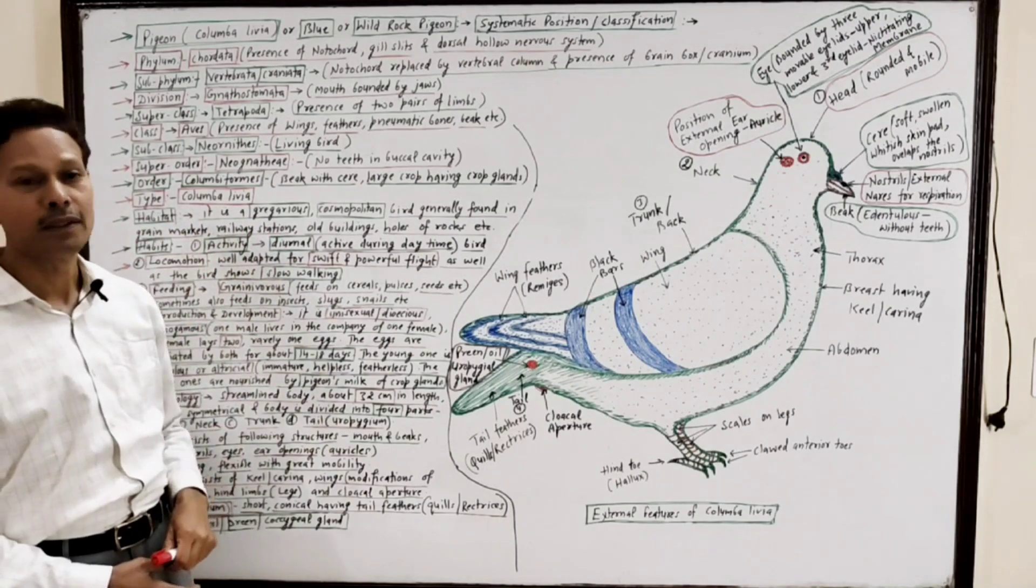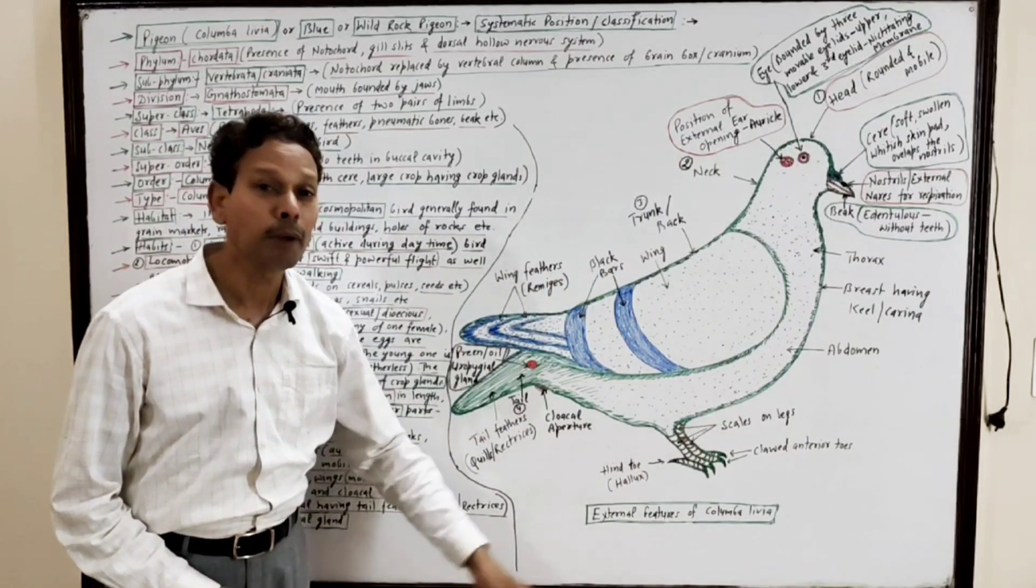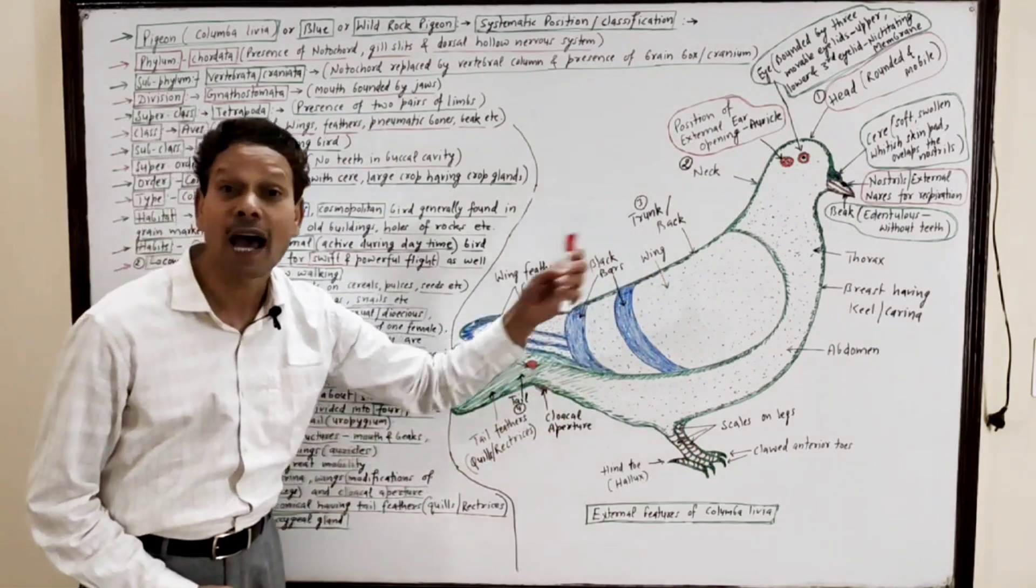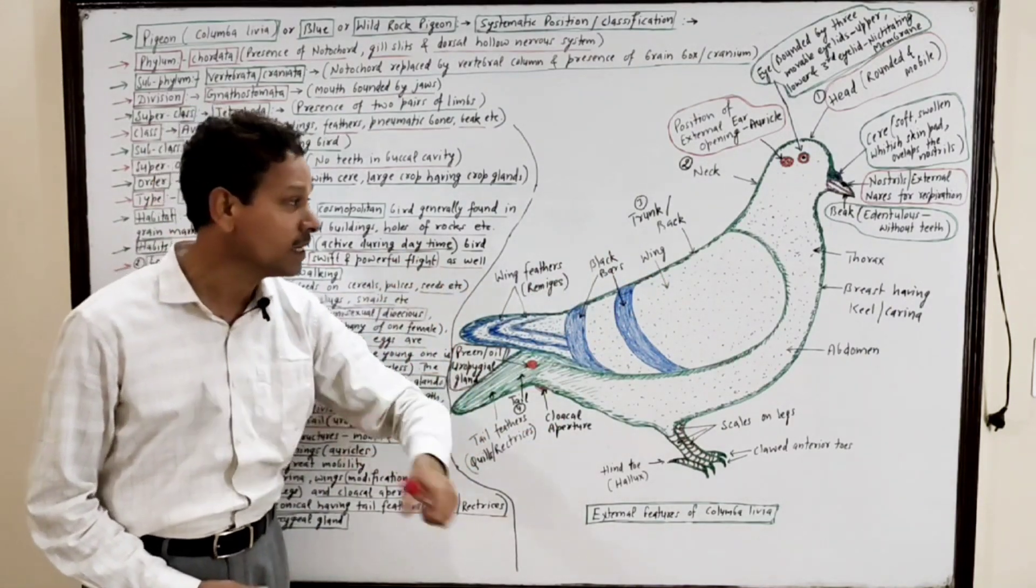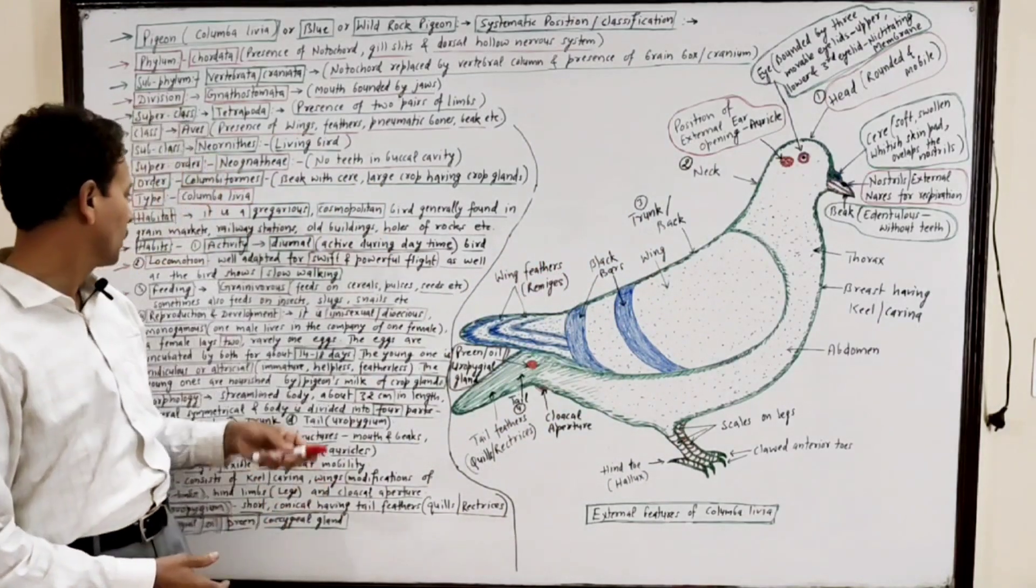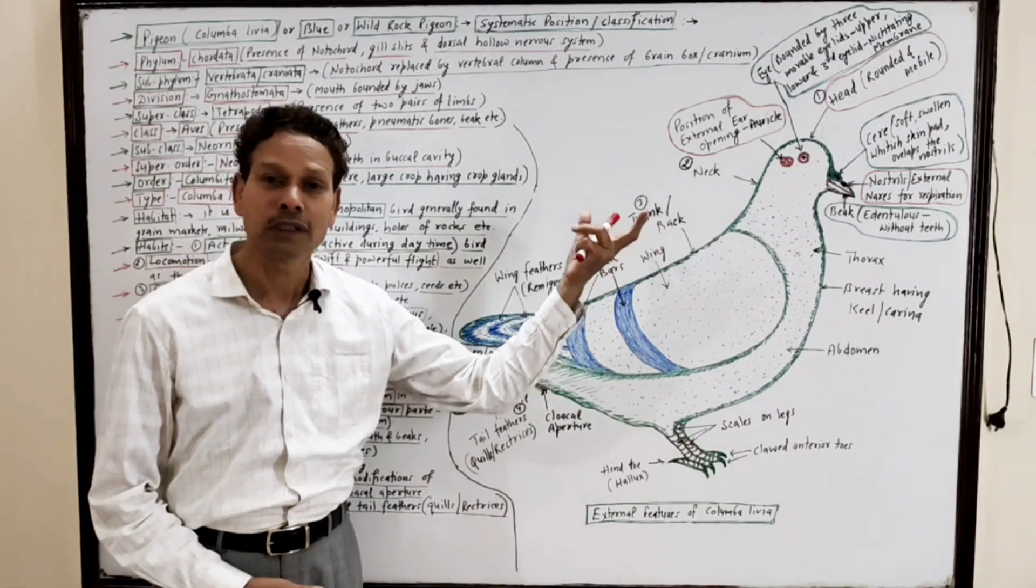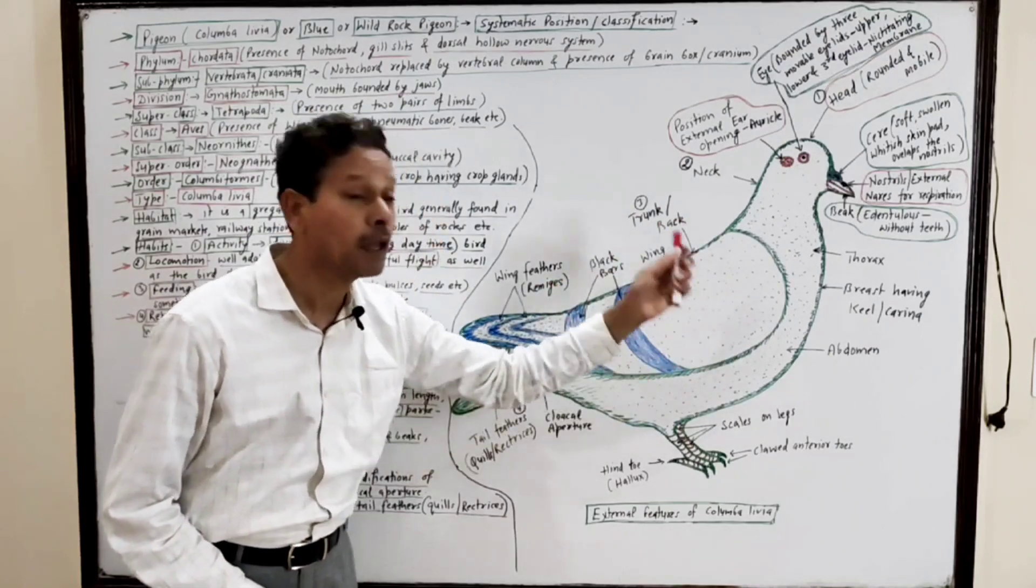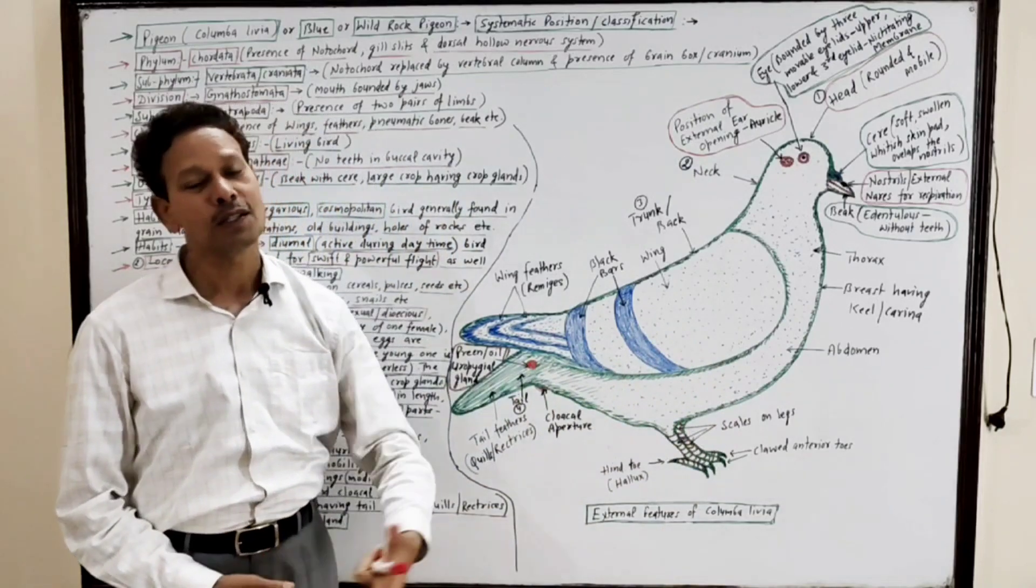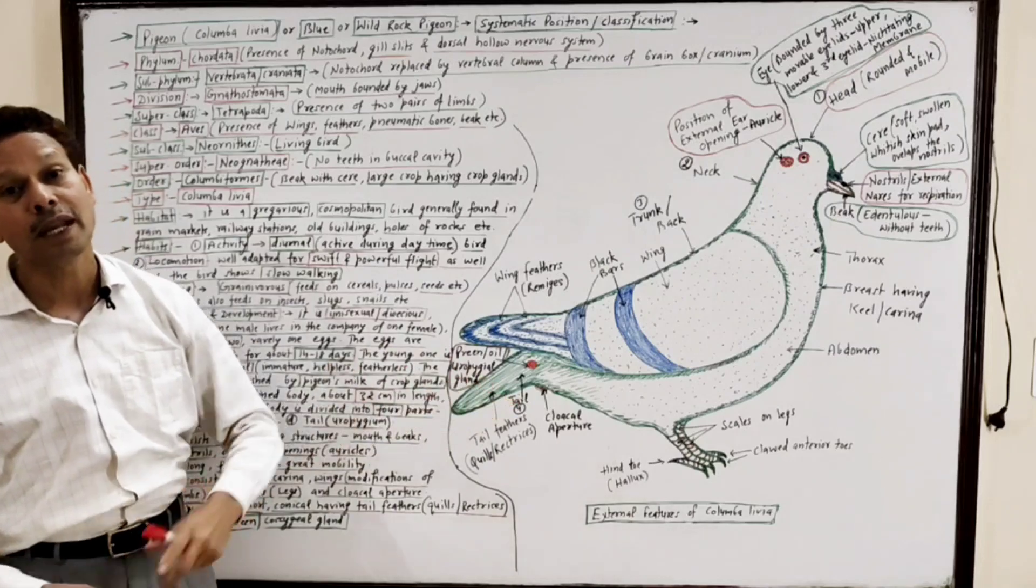Habits. Activity - the pigeon Columba livia, the blue or wild rock pigeon, is diurnal, meaning the bird remains active during daytime. Locomotion - pigeon is well adapted for both flight adaptation due to presence of a pair of wings, as well as slow walking due to presence of a pair of hind limbs or legs.